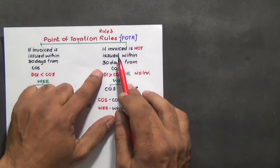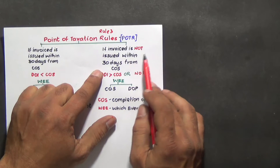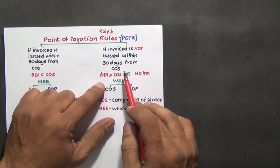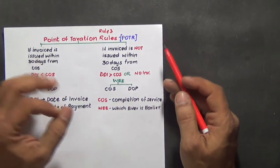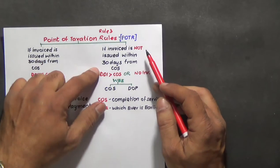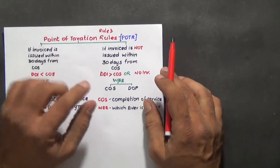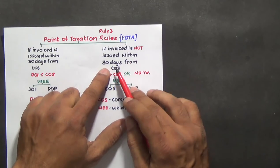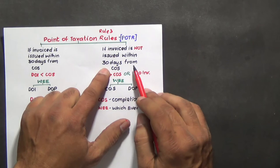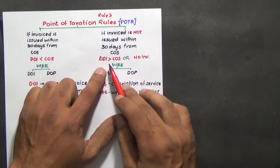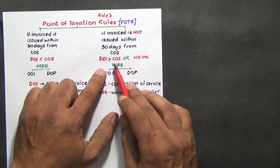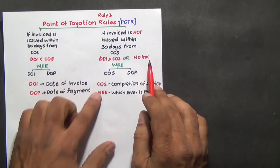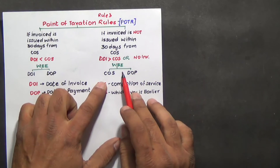If the invoice is not issued within 30 days from the completion of service — meaning if the invoice is issued after 30 days or not issued at all — both mean the same. Then the point of taxation is whichever is earlier between completion of service and date of payment.